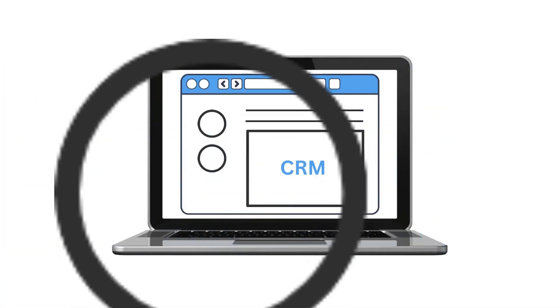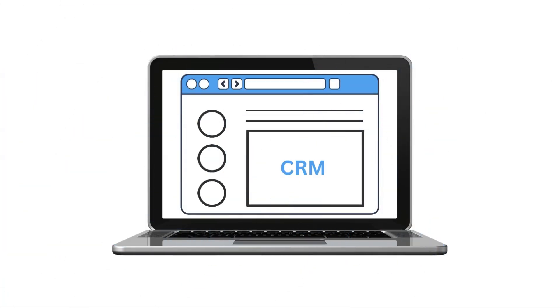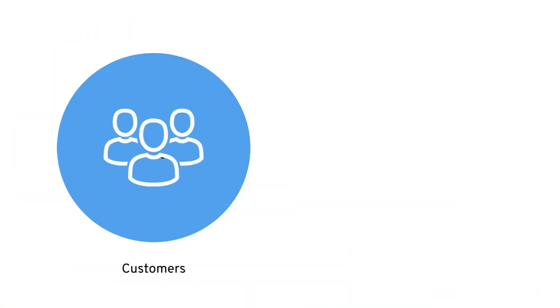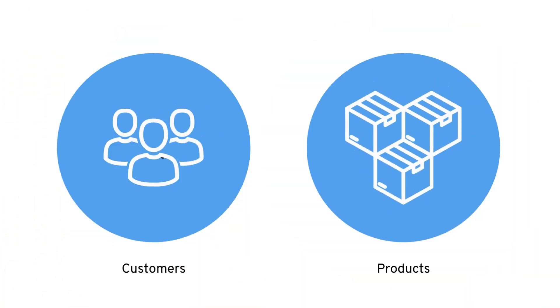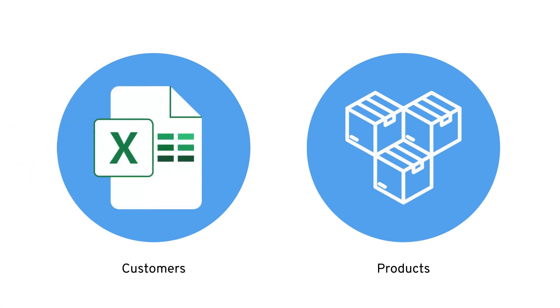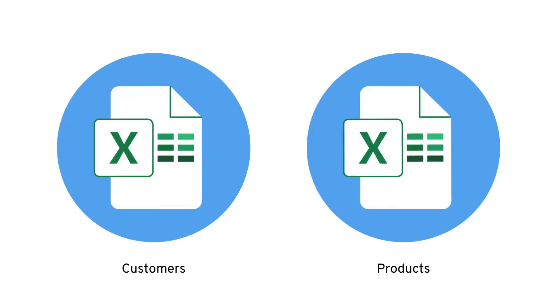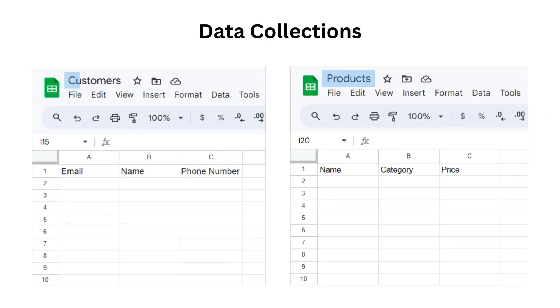For example, if you are building a CRM app, you will need to manage data for different customers and products that you offer. You can think of data collections as spreadsheets. For example, in our CRM, we'll have two data collections for products and customers, and then within those spreadsheets,